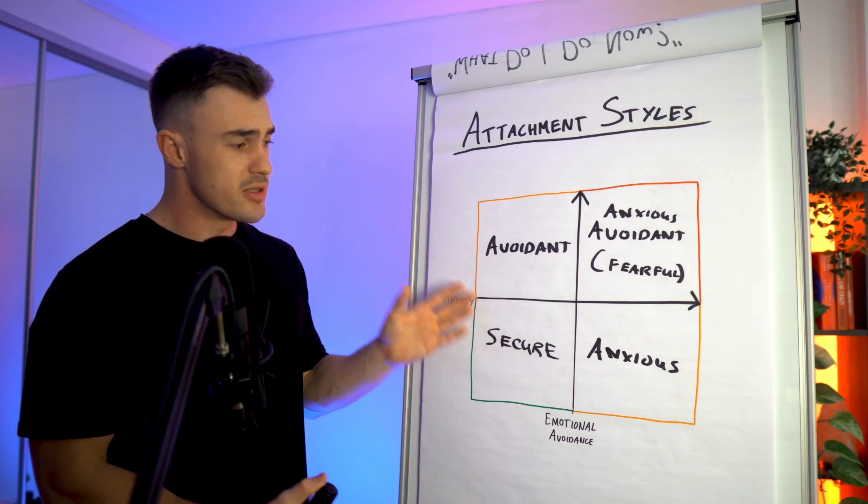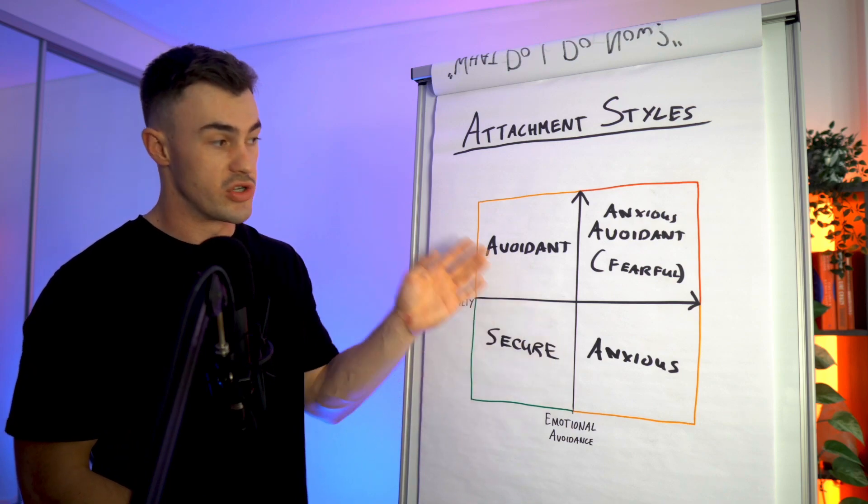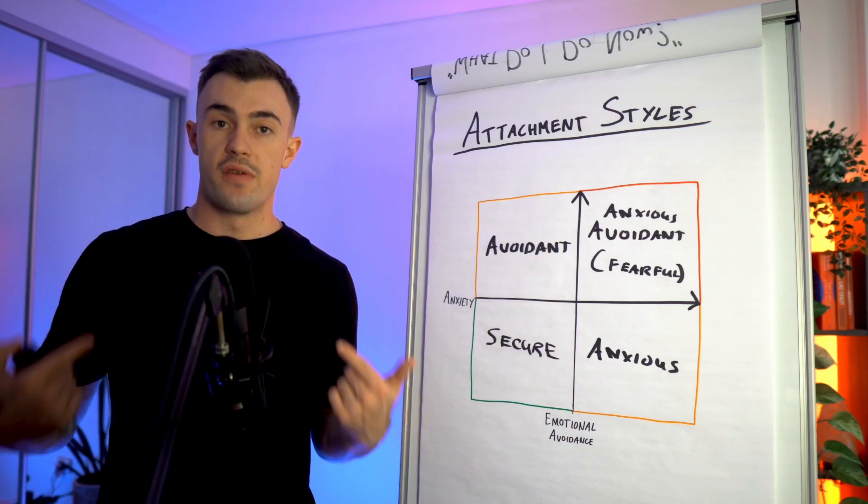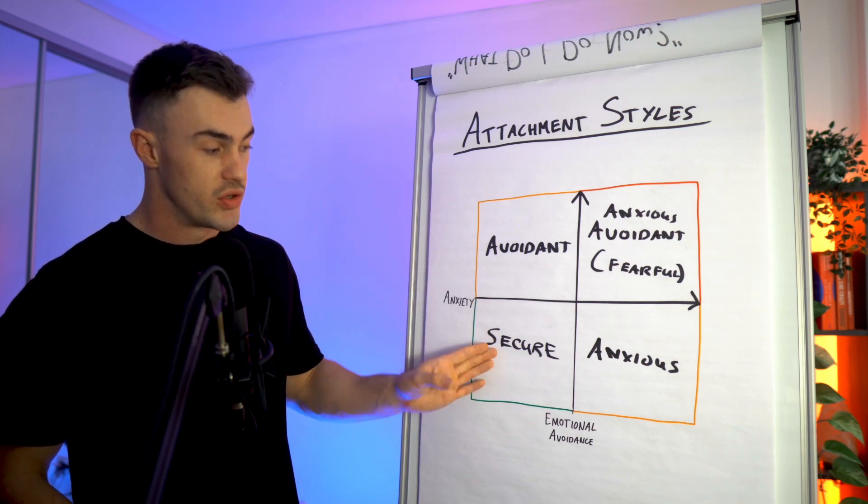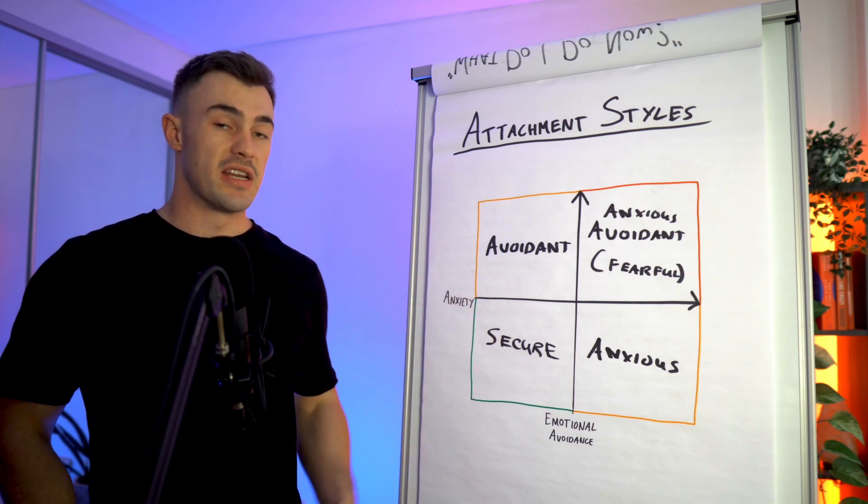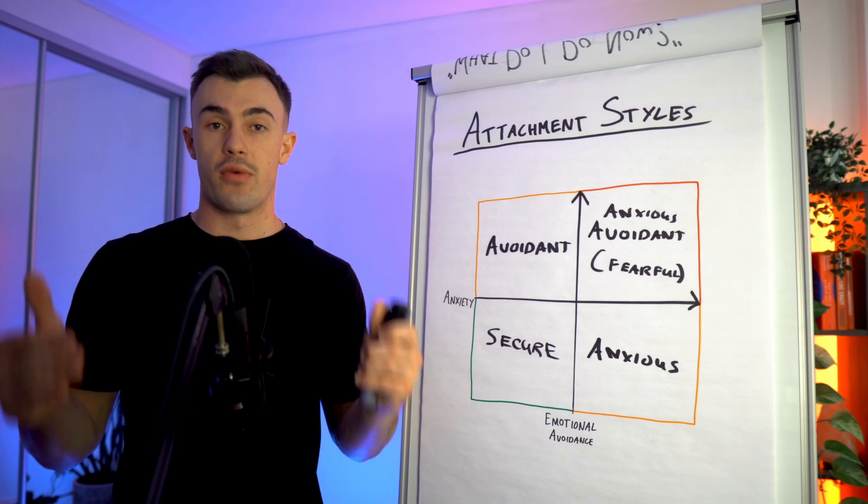Well, if you're able to start to look at all these different vectors, depending on which one you're in, which box you fit in, and you're able to become aware of these different areas you have to improve, you will be able to move yourself into a securely attached position and develop that attachment style so that you can have thriving relationships.